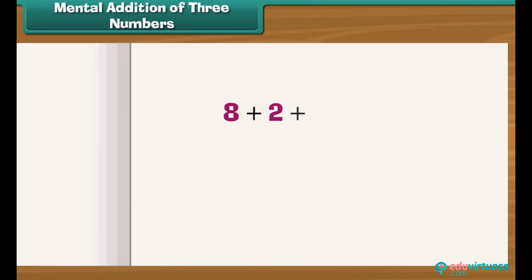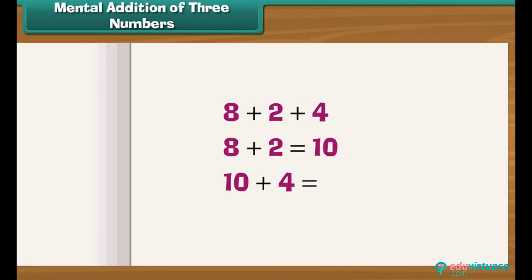Mental addition of three numbers: Let us now learn to add three numbers mentally. To add three numbers, we add two numbers first and then the third. We make sure that the two numbers we add first make 10 or a number that ends with 0, as it speeds up our addition.